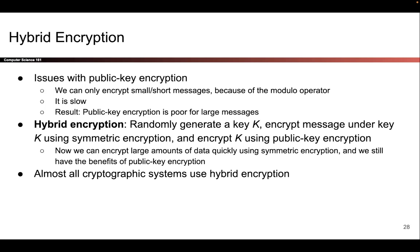To solve that, we can use something called hybrid encryption, which tries to get the benefits of both public key encryption and symmetric key encryption. When Alice wants to send a message to Bob, the first thing she does is generate a symmetric key K, then encrypt K using public key encryption. That's okay because K is a pretty small value, and she sends that over to Bob.